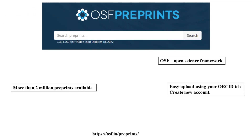Another interesting preprint server is OSF Preprints, also called Open Science Framework Preprints. It has more than two million preprints available. It's very easy to upload using your ORCID ID or by creating your own account.